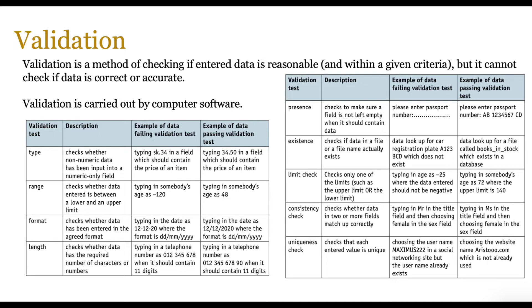And then you have existence checks, which check if data is in a file or it actually exists. And then there is the limit check, which checks only one of the limits, such as the upper limit or the lower limit of an age. So it's an extension of that range check.